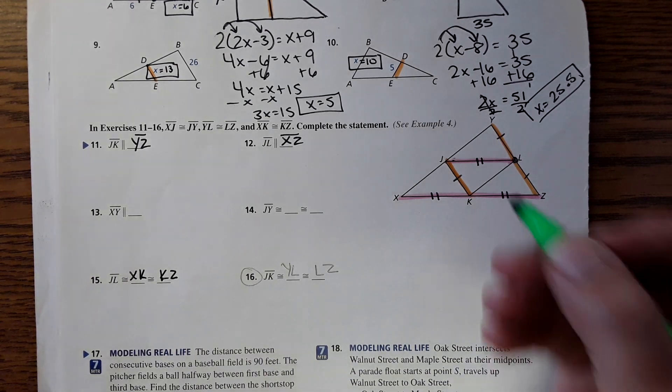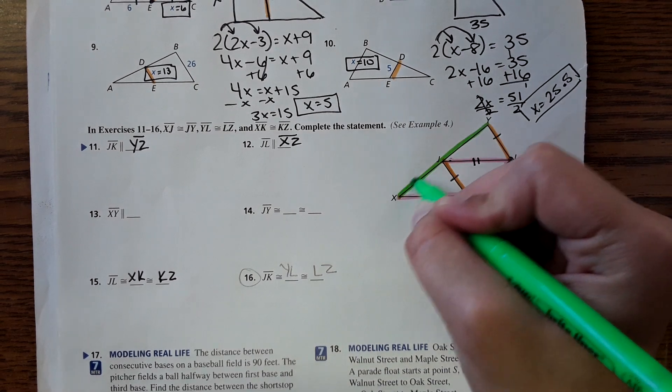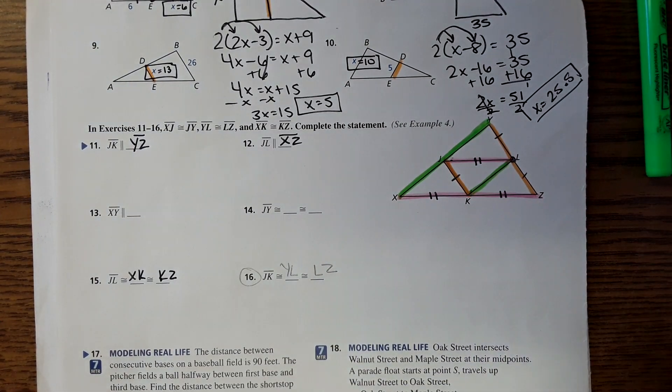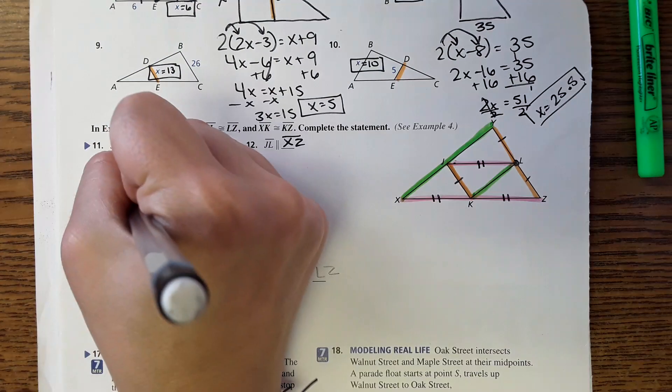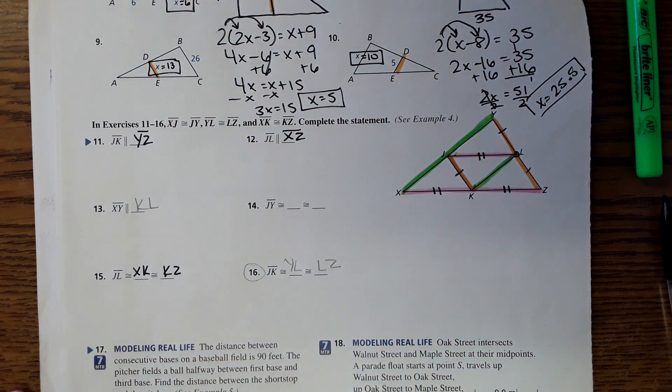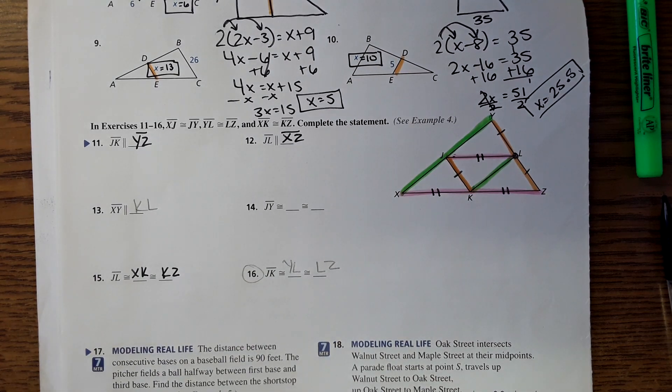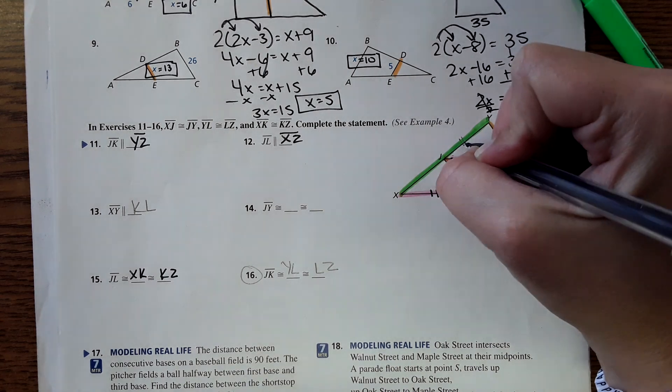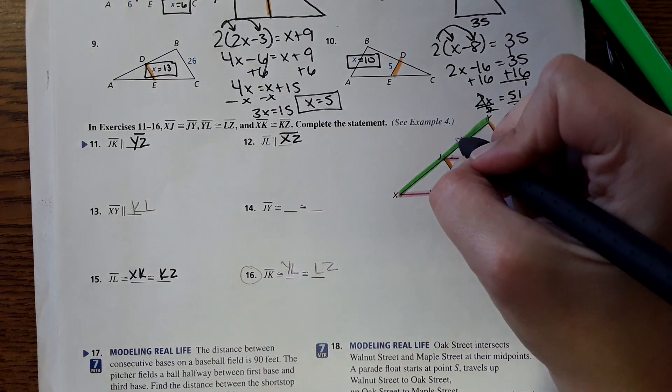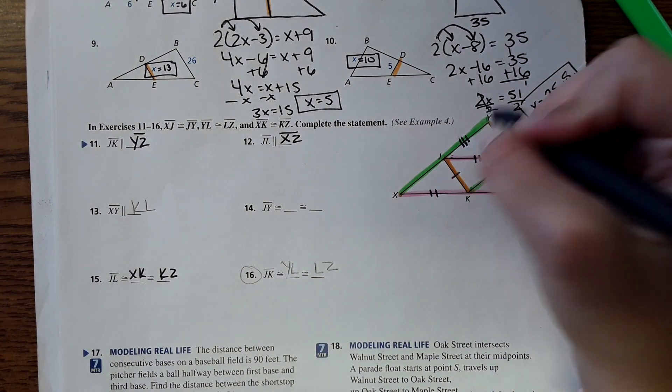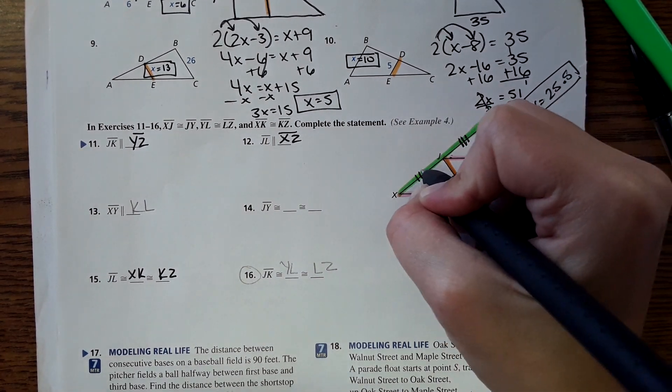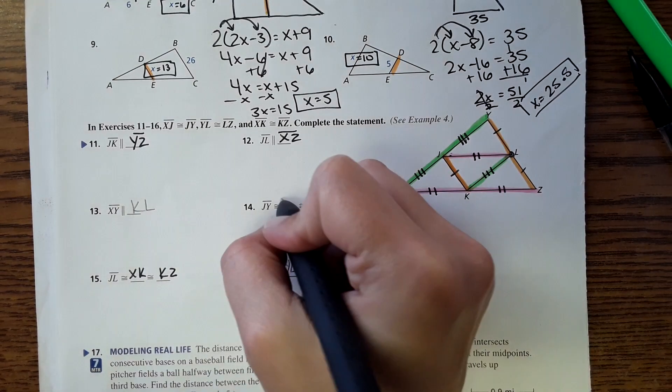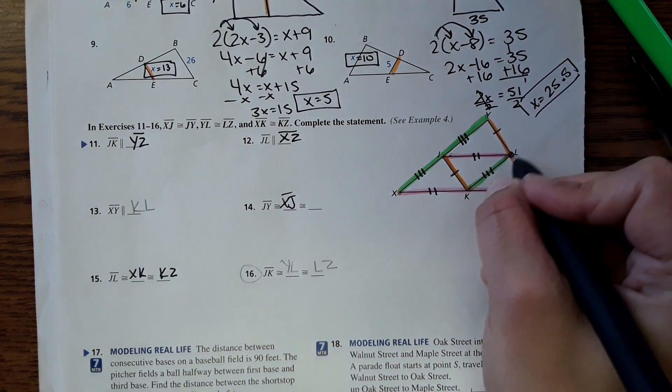Okay, and then XY right here wants to know what's parallel to that. Well it would be this segment right here. And then it wants to know what's congruent to JY. JY would then be equal to this segment right here as well as this one right here. So JY equals XJ and KL.